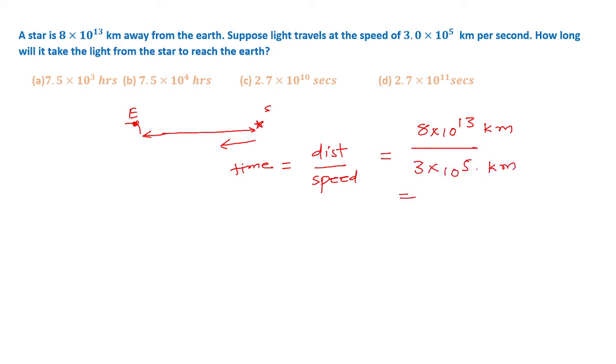Now if we simplify this, then this would be equal to 2.7 × 10^8. This second comes into the numerator, so 2.7 × 10^8 seconds.